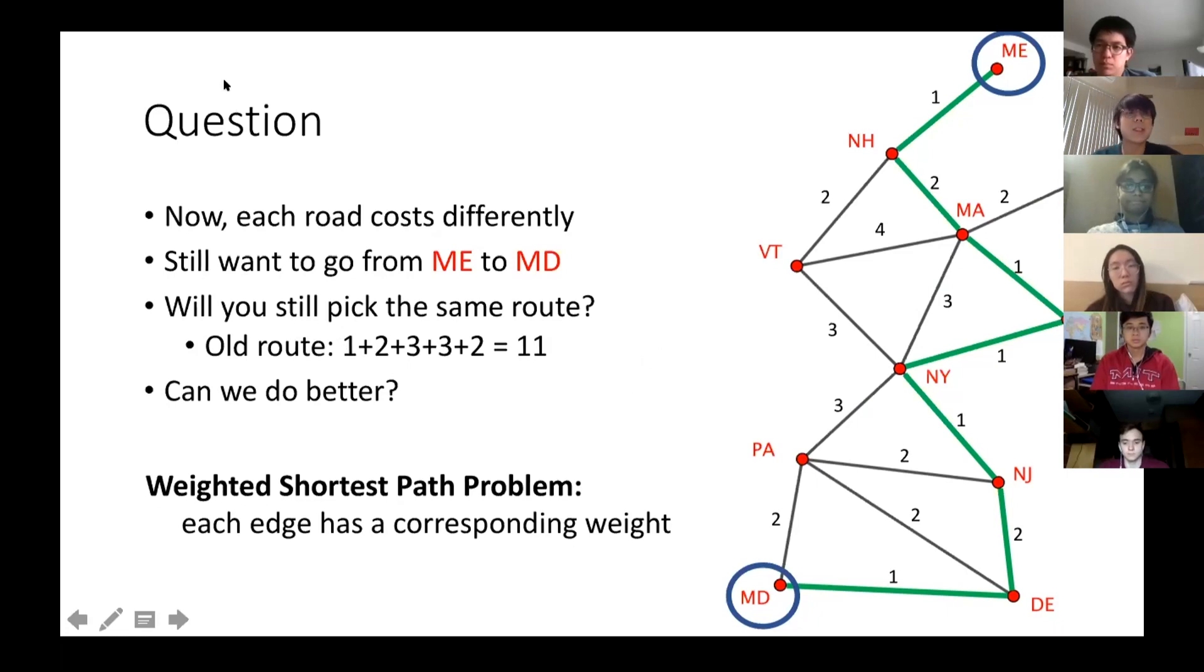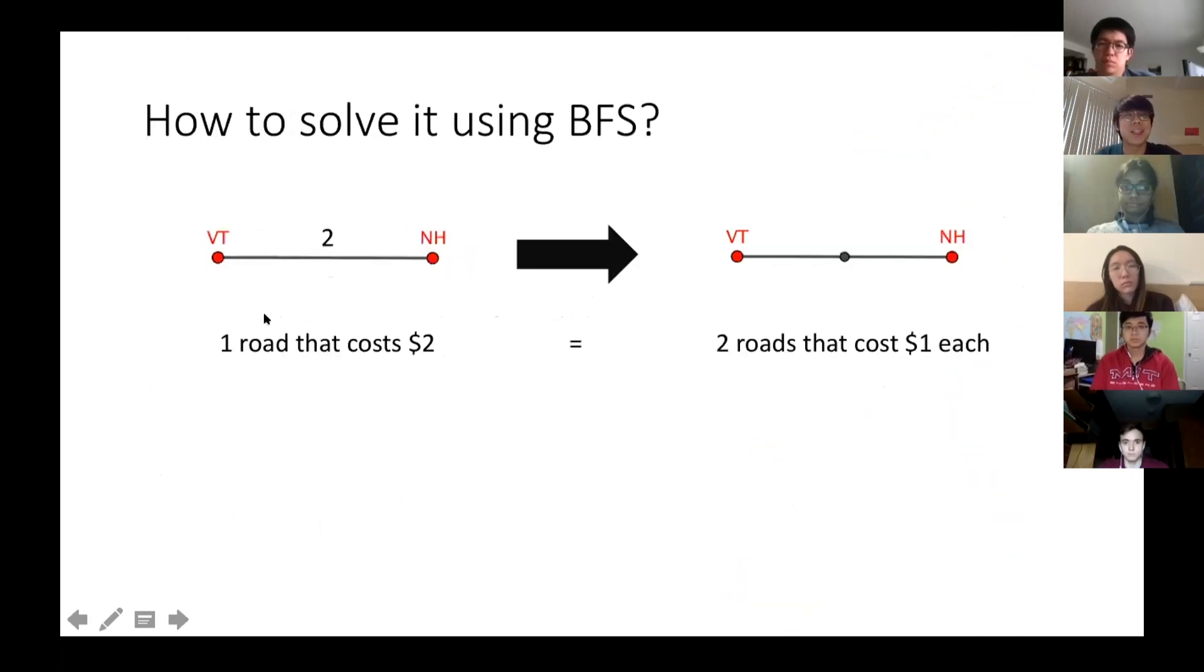As you can see, the traditional breadth first search will not work on this graph because it will just tell us to go on this way, the old way, but the actual cheapest route is just to go on the green line. So the question is, how can we solve it by using the BFS? The answer is we need to do some modifications. To use the BFS to solve it, we can add an intermediate node here. We're basically going to split up the roads. From one road that costs you $2, it's going to be split up into two roads that cost you $1 for each road. Is the diagram clear for you? Yeah. The same thing with the road that costs you $3 can be split into three roads that cost you $1.